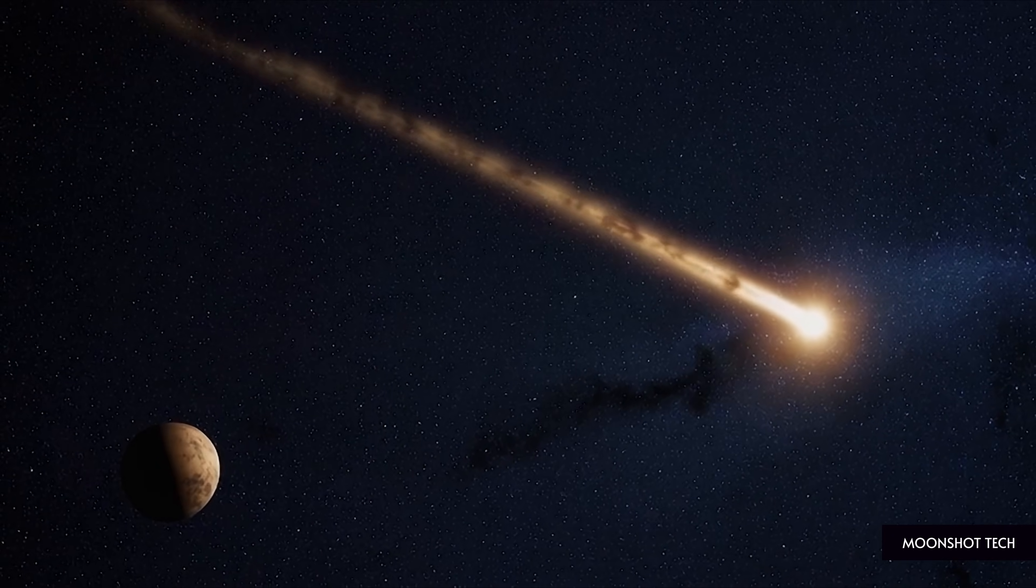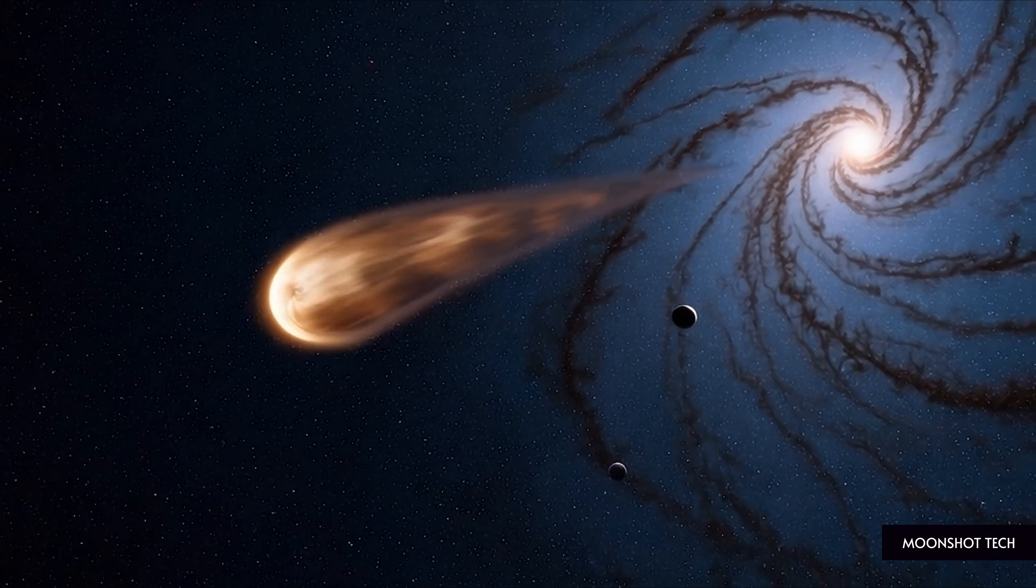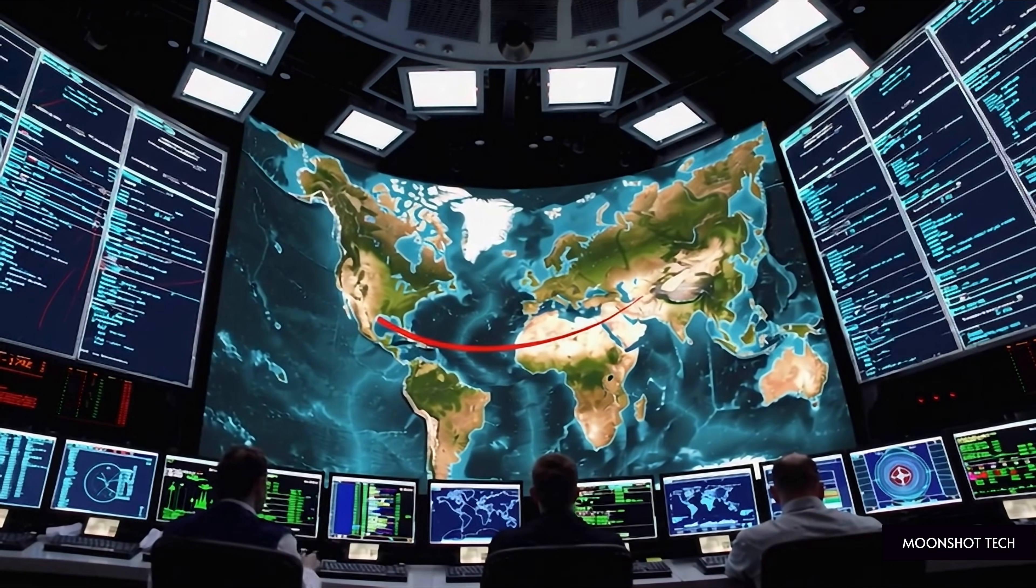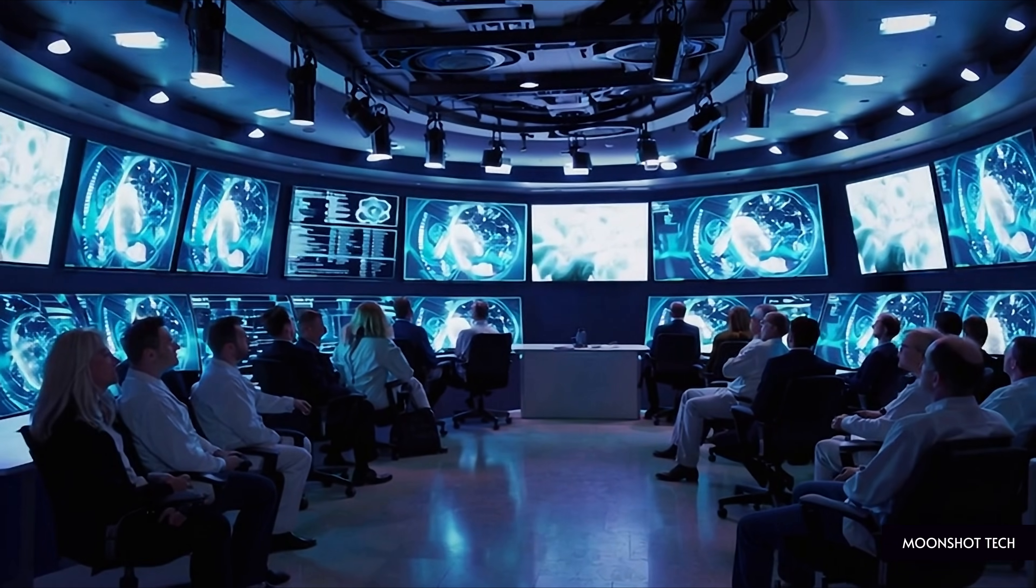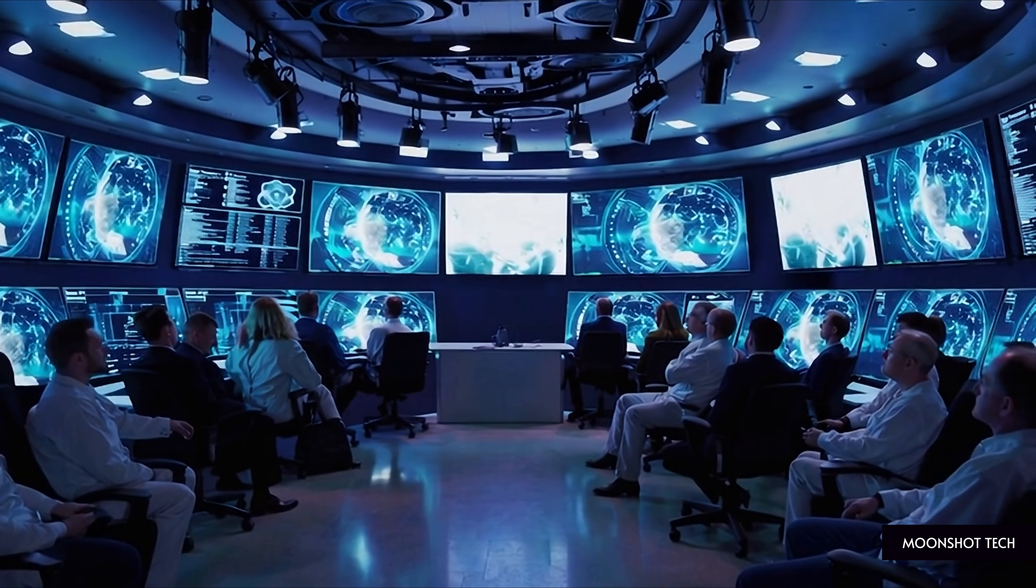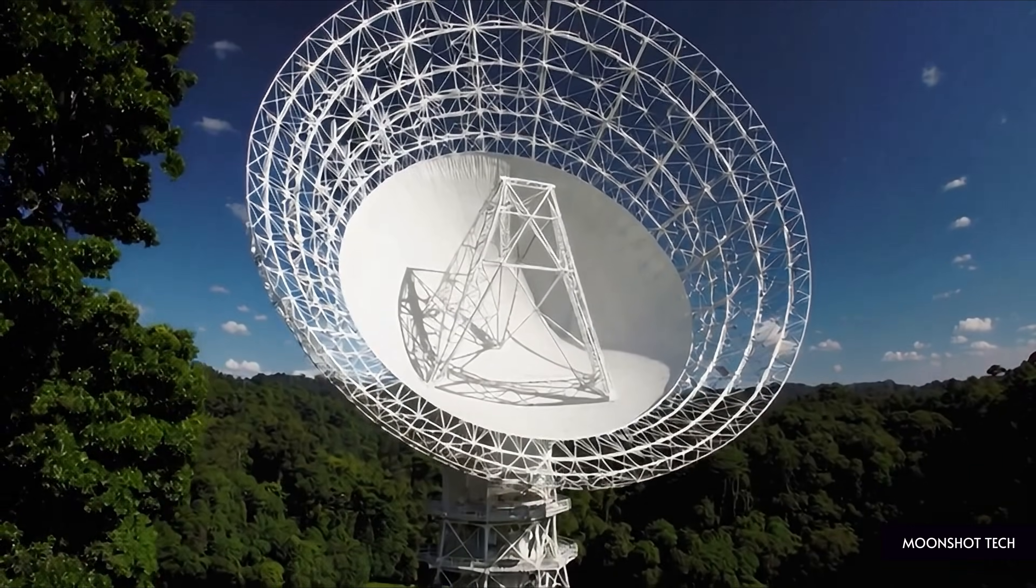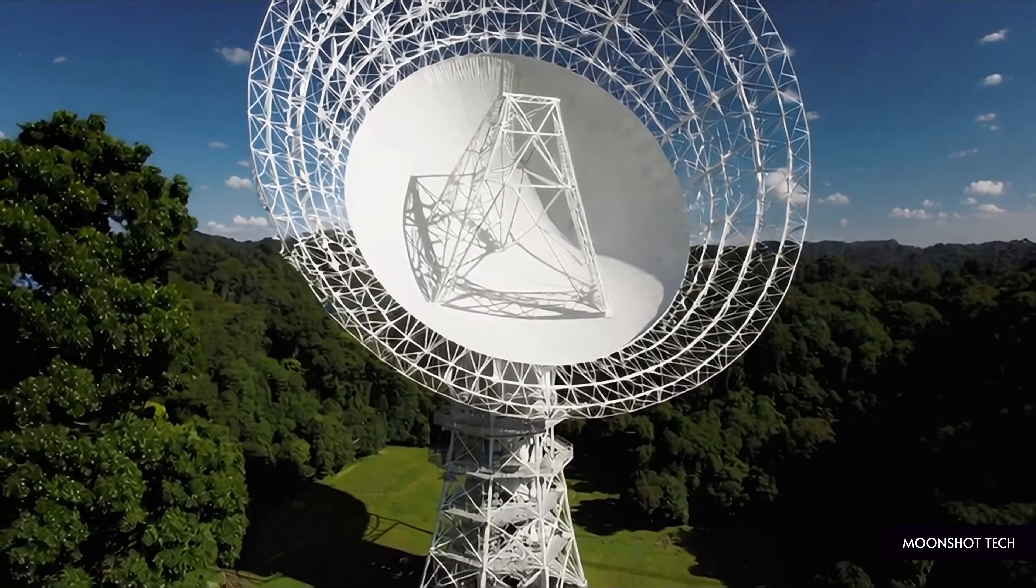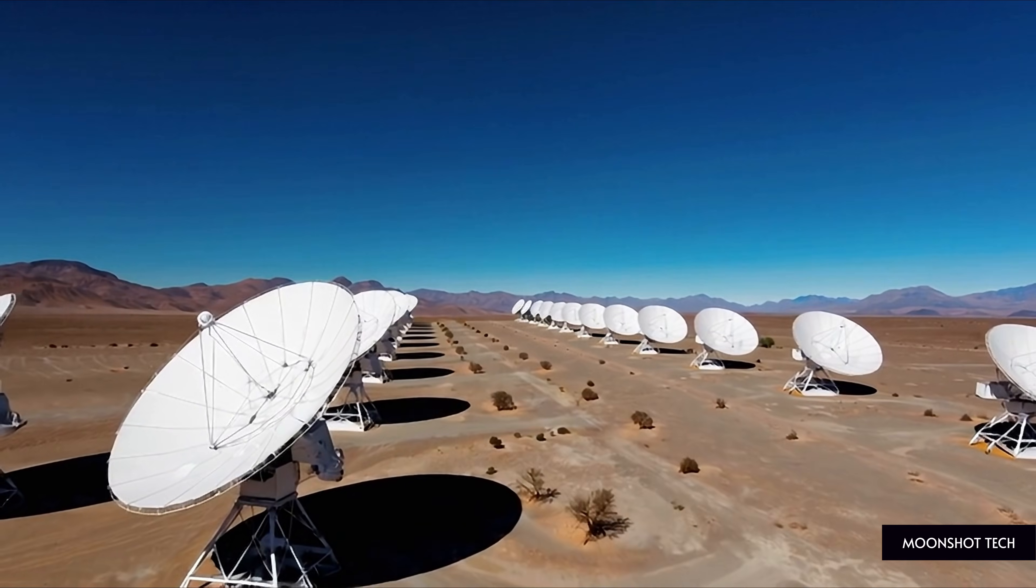Which brings us back to the anti-tail, the triple-jet structure, the symmetric geometry, all of it intensifying when it should be fading. In response, NASA's Planetary Defense Coordination Office activated enhanced monitoring protocols. Not because 3i Atlas threatens Earth, it passed safely at 270 million kilometers. But because this object is doing something that demands every available telescope be pointed at it while we still can.